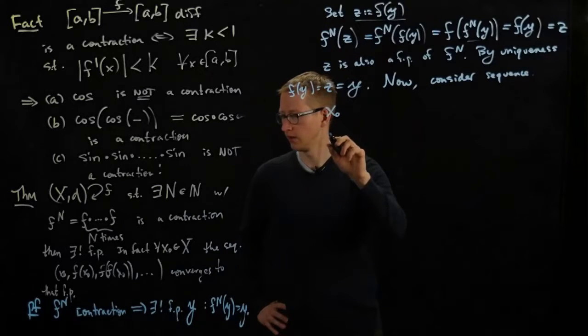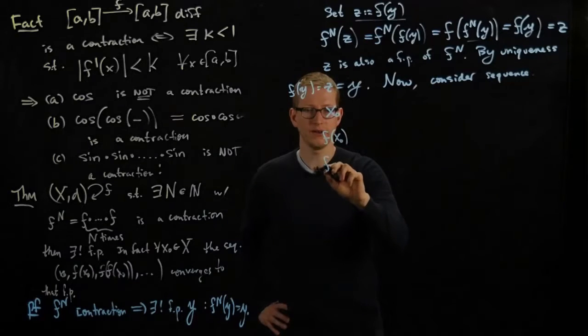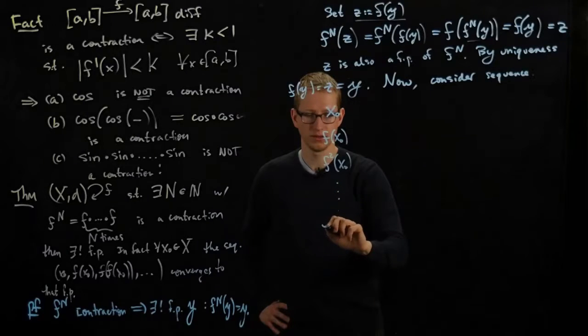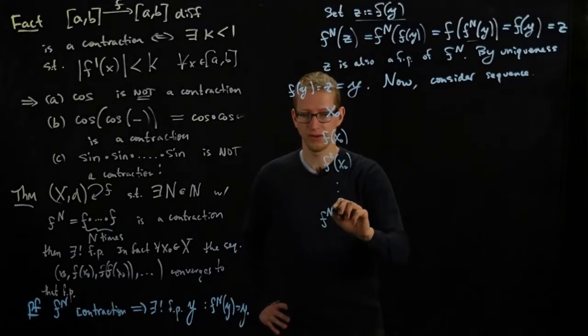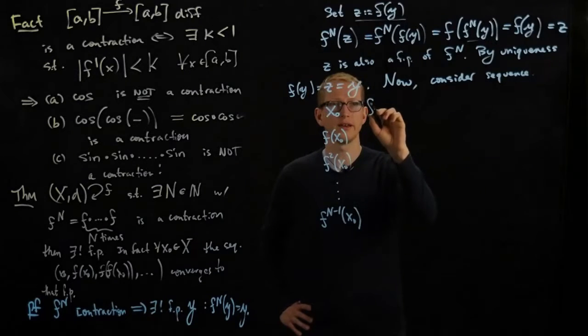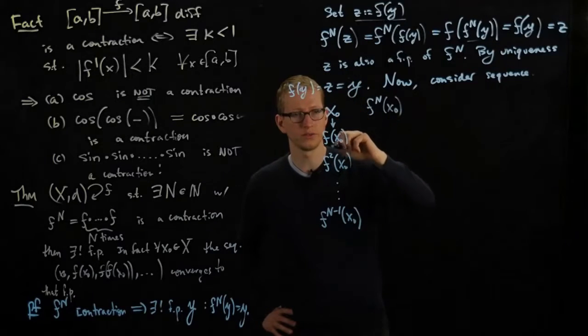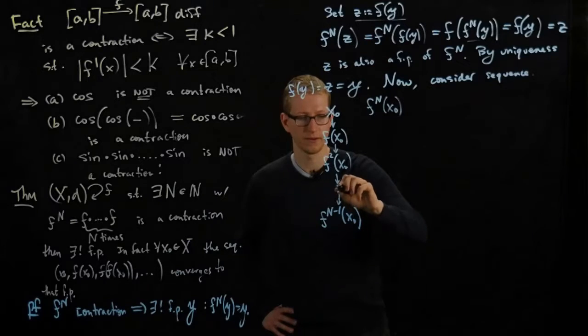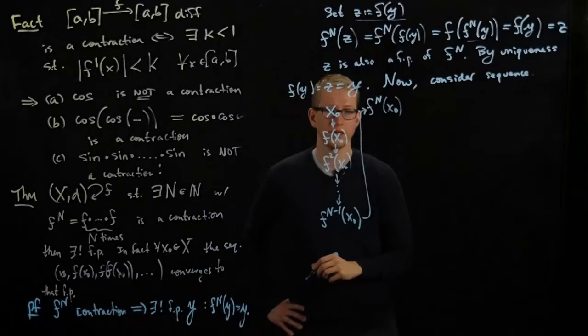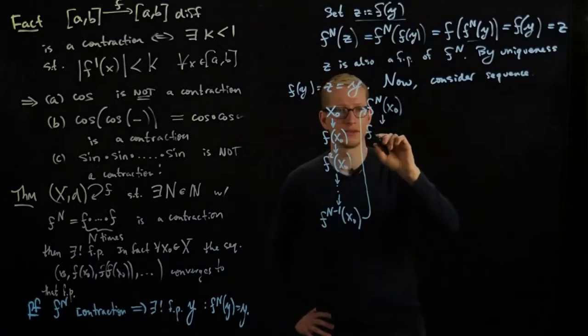Let's write x0, f of x0, f of f of x0, f2 of x0, and so on, until f n minus 1 x0, and here let me write f n x0, and again this sequence is going in this direction. So let me write that out, and then it goes back in this direction. All I'm doing is I'm rewriting it and we're going to see that this is actually a useful way to think about the sequence.